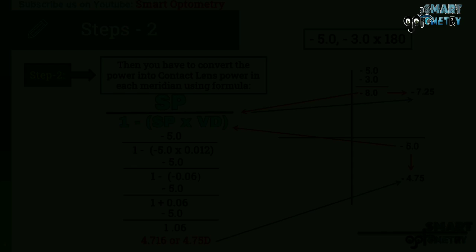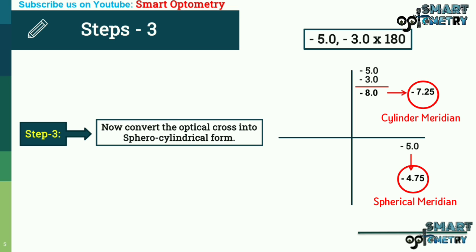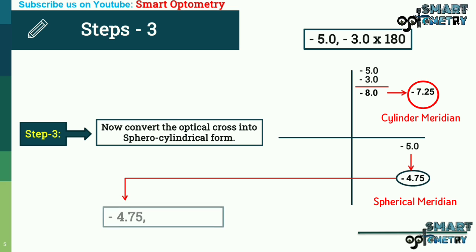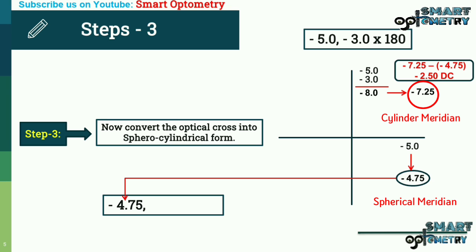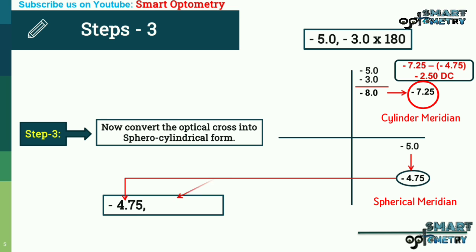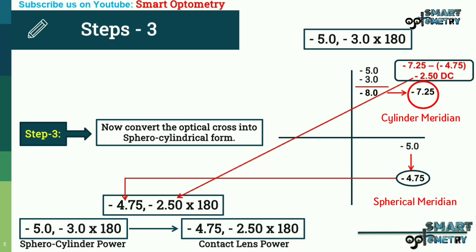Step 3: Consider the horizontal meridian as the spherical meridian and the vertical as the cylindrical meridian. The horizontal meridian gives us a spherical power of minus 4.75. Since spherical power is present equally in all meridians, we subtract it from the cylindrical meridian: minus 7.25 minus (minus 4.75) equals minus 2.50 cylinder. The final contact lens power is minus 4.75 sphere with minus 2.50 cylinder at 180 degree axis. So the original prescription of minus 5 with minus 3 at 180 degrees converts to minus 4.75 sphere with minus 2.50 cylinder at 180 degrees.